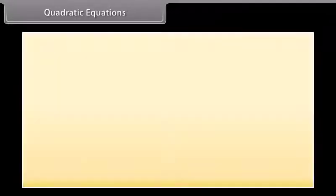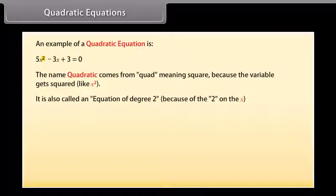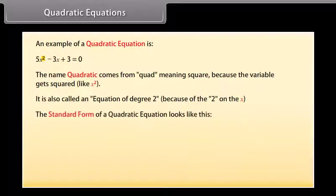An example of a quadratic equation is shown here. The name quadratic comes from 'quad' meaning square, because the variable gets squared — like x squared. It is also called an equation of degree 2 because of the 2 on the x. The standard form of a quadratic equation looks like this: ax² + bx + c = 0.